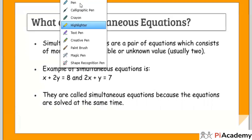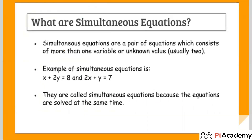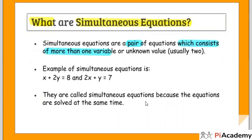What are simultaneous equations? This is the basic doubt you must all have, so nothing to worry. Basically, simultaneous equations are a pair of equations — so there should be a minimum of two equations required — which consist of more than one variable, meaning two or more variables.